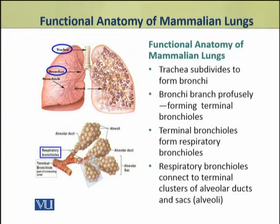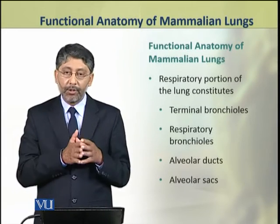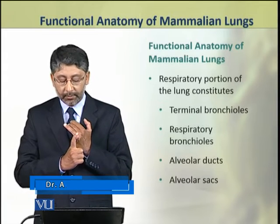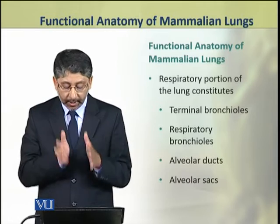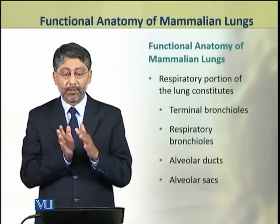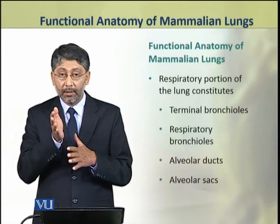Respiratory bronchioles are connected to a cluster of alveolar ducts or sacs which are called alveoli. These terminal clusters are just like in a grape fruit, where branches run along but at the end, a cluster of small fruits is attached to the branch — similarly, these alveoli are attached to alveolar ducts along with respiratory bronchioles. So the respiratory portion of the lung constitutes the terminal bronchioles, respiratory bronchioles, alveolar ducts and alveolar sacs. This is where gas transfer occurs — most gas transfer happens in alveolar sacs, but some gas exchange is also possible in alveolar ducts, respiratory bronchioles, and terminal bronchioles, because they are thin-walled tubules.